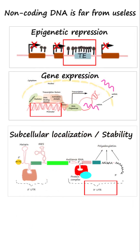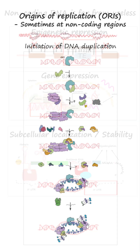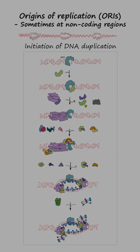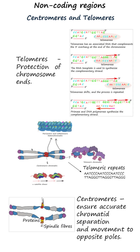However, non-coding DNA is far from useless. Origins of replication are crucial for DNA duplication and are often found in non-coding areas. Centromeres and telomeres ensure accurate chromosome segregation and protect chromosome ends from degradation.